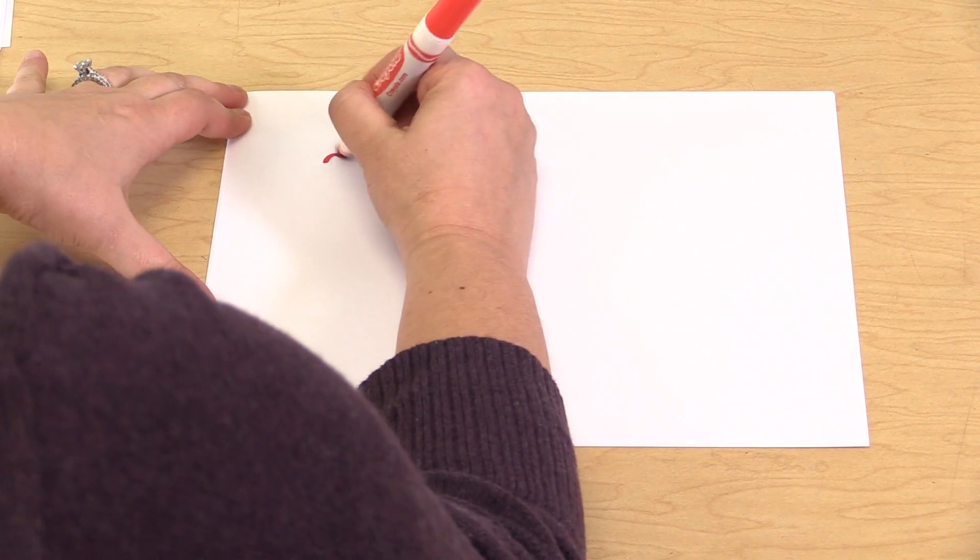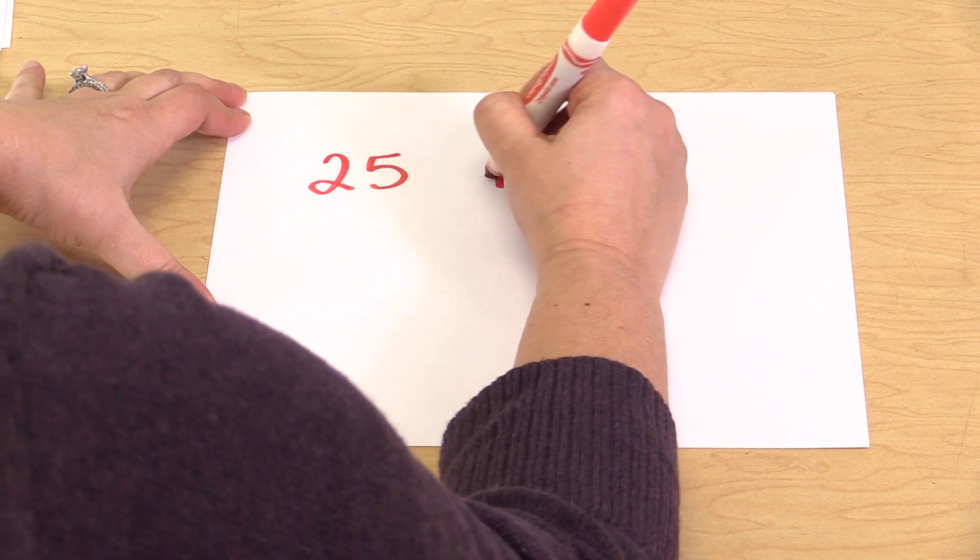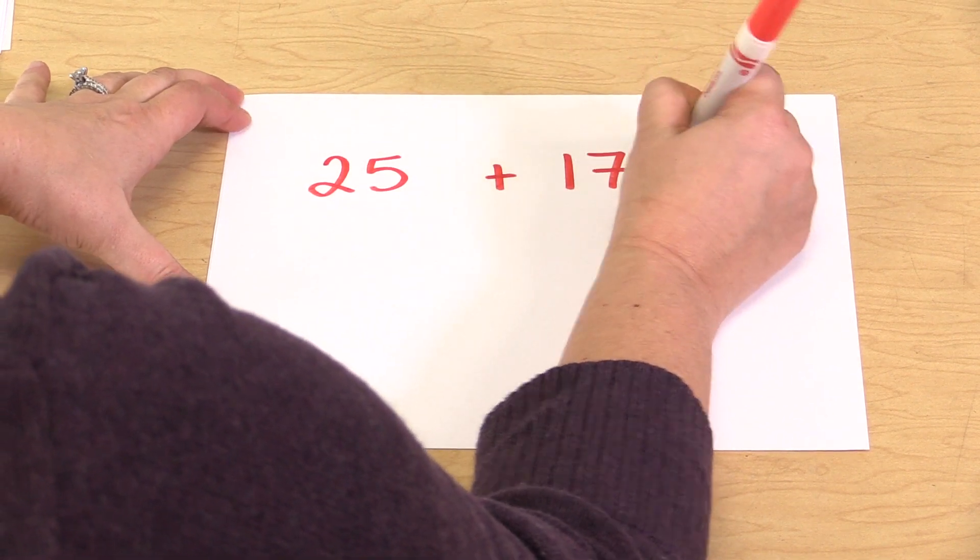Now we're going to move on to double digit addition with regrouping. So if we have a problem like 25 plus 17,